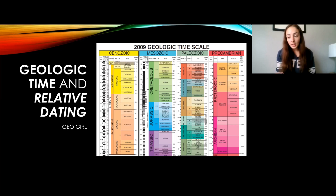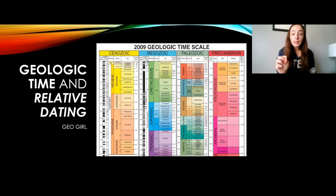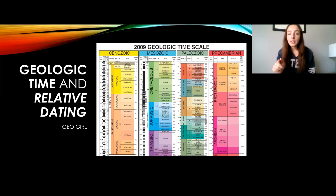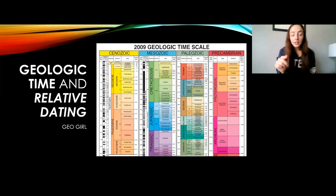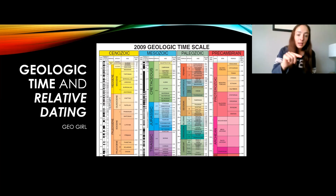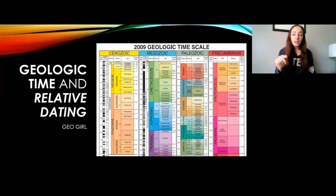The timescale goes all the way back to 4.5 billion years ago at the beginning of the Hadean, which is at the bottom right of the figure. It starts at the bottom right and goes up from the Hadean to the Archean to the Proterozoic. Then it goes back down — you see where it says Cambrian — and if you go one more column to the left it goes up to Permian, then back down to Triassic, up to Cretaceous, back down to Paleogene, and up to Neogene. That is how you read this timescale.